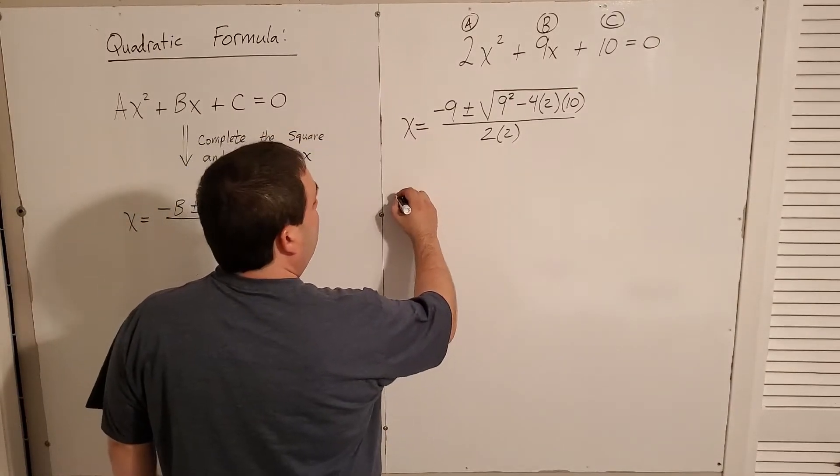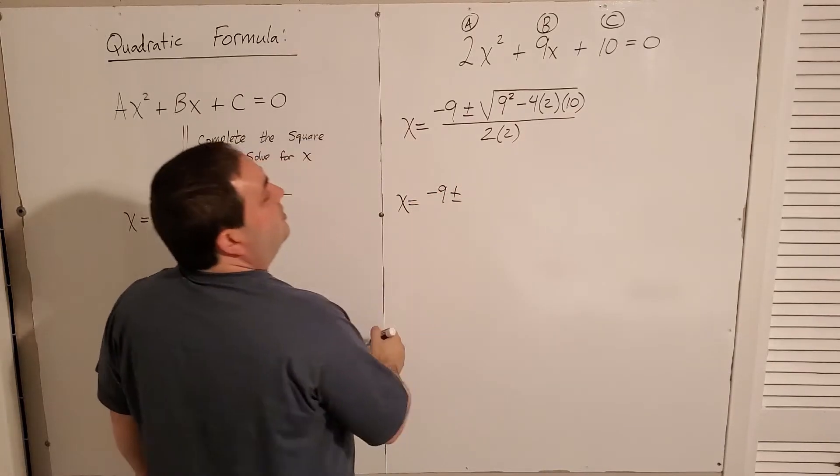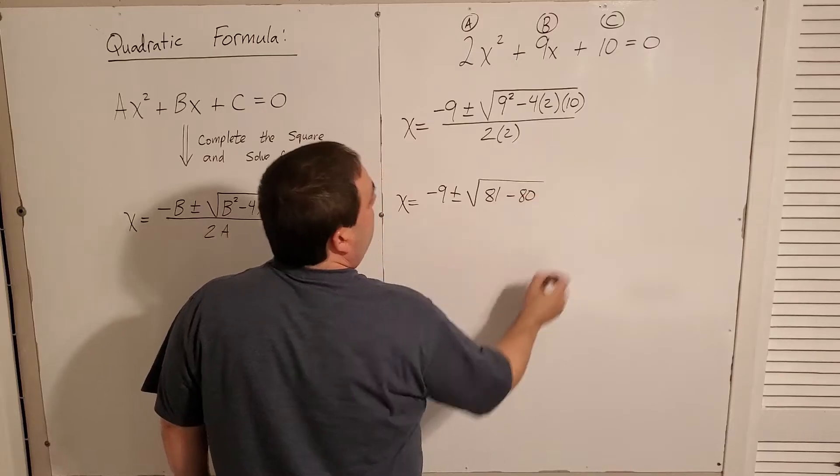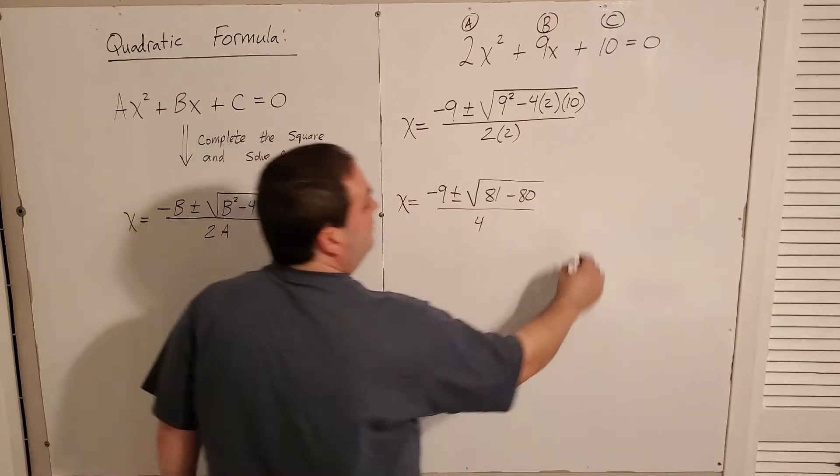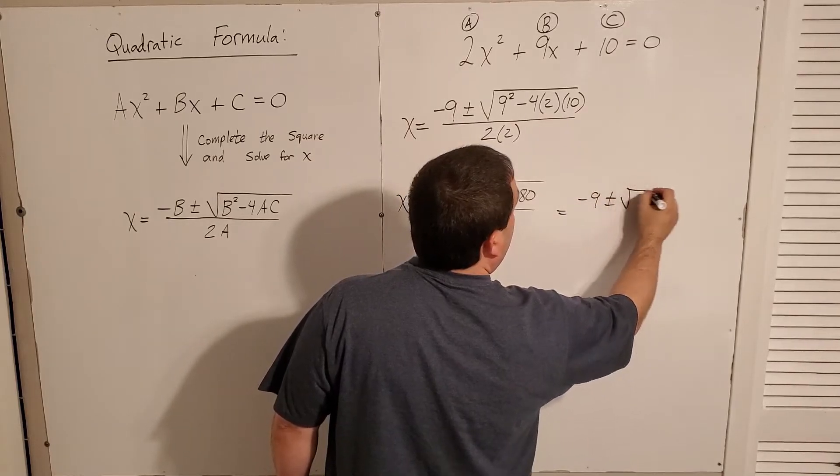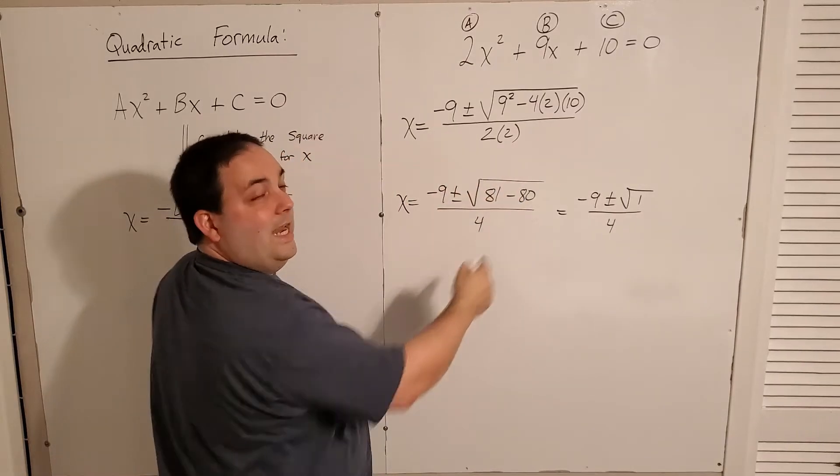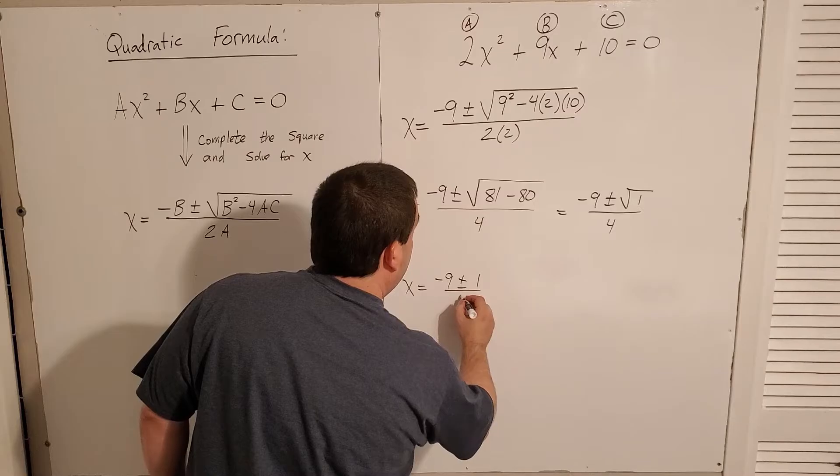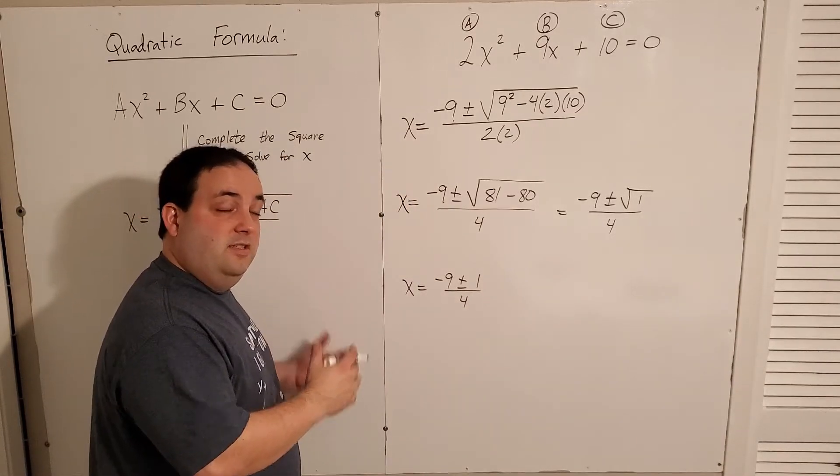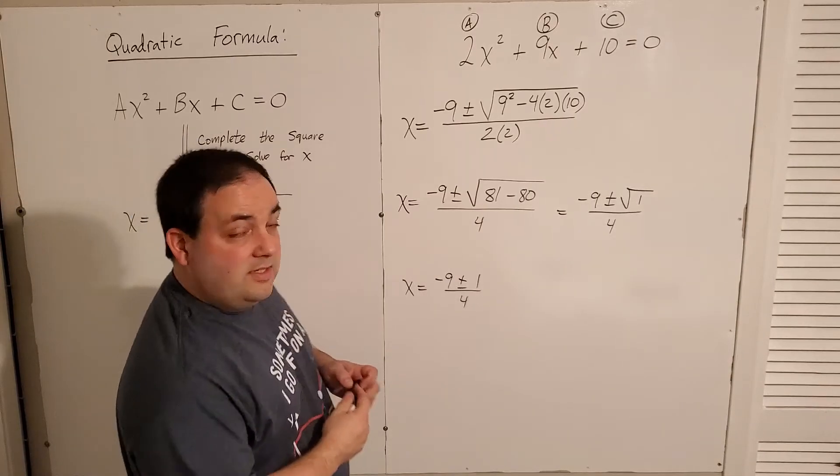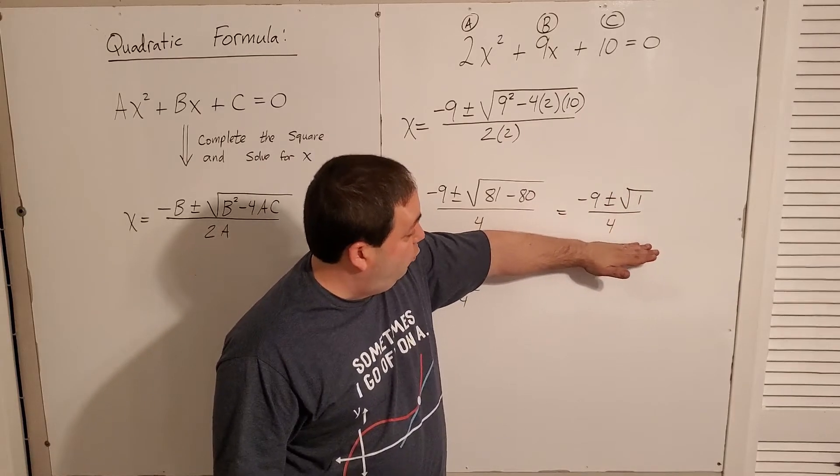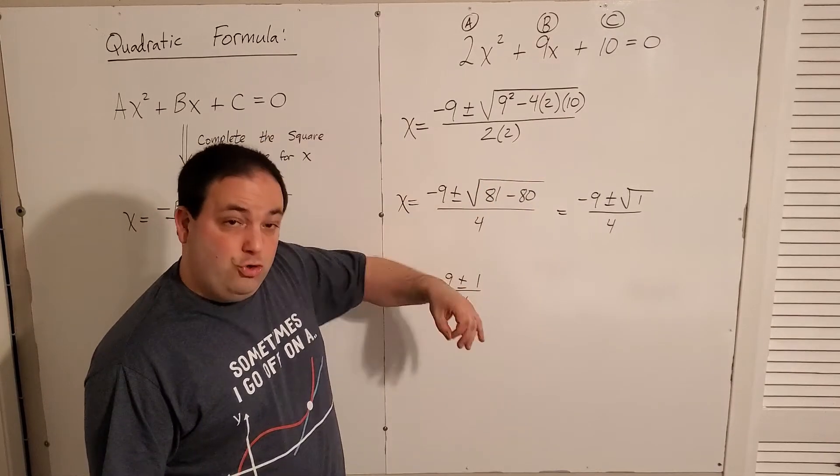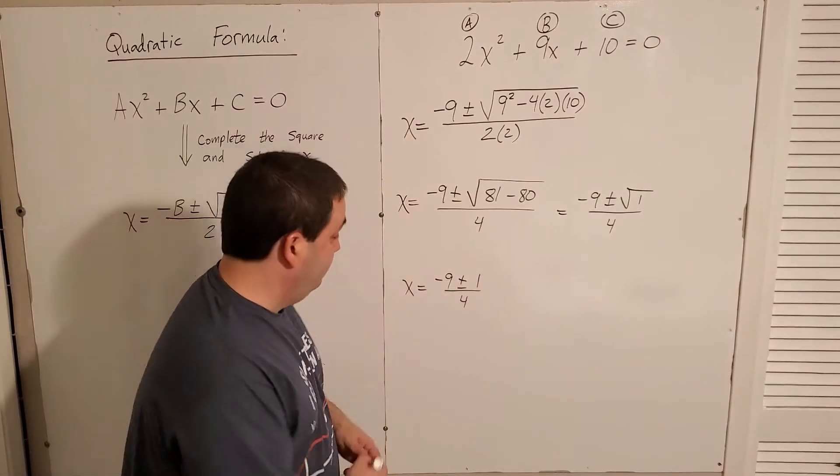All right, now we just simplify. X equals negative 9 plus or minus square root of, that's 81 minus 80. And then 2 times 2 is 4. So negative 9 plus or minus the square root of 1 over 4. I can actually do the square root of 1. Good news. Sometimes when you're doing these things, you will be able to do the square root, and other times you won't. You'll just be able to simplify it, or maybe you won't be able to do any of it at all. There are some of these formulas, setups, where this is like where you stop because you can't do anything else with that radical. In this case, I can.